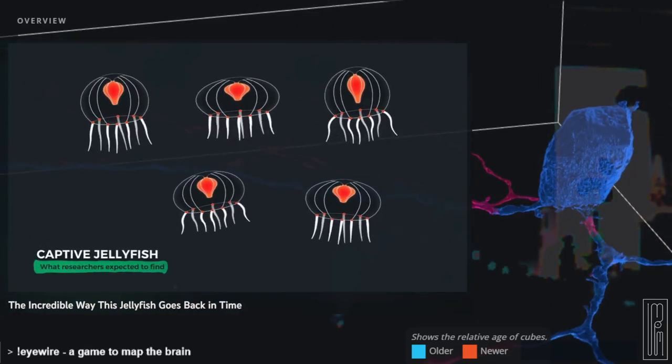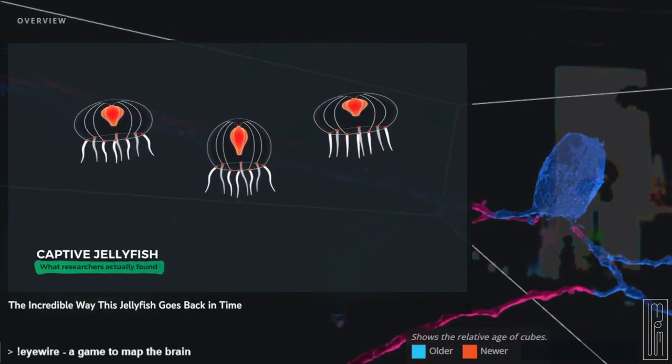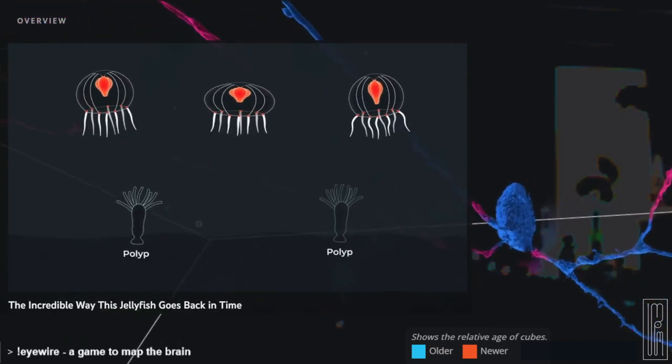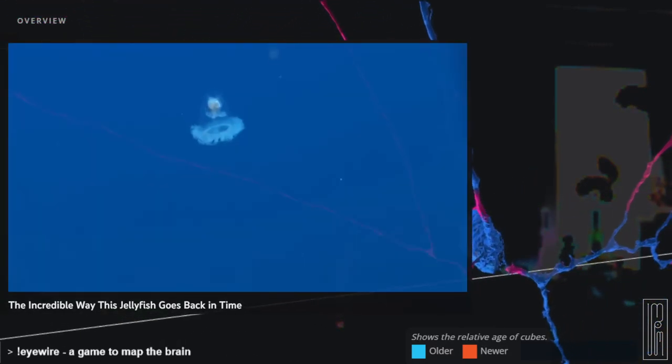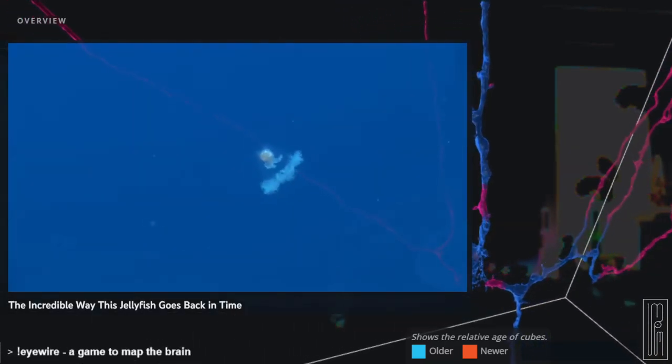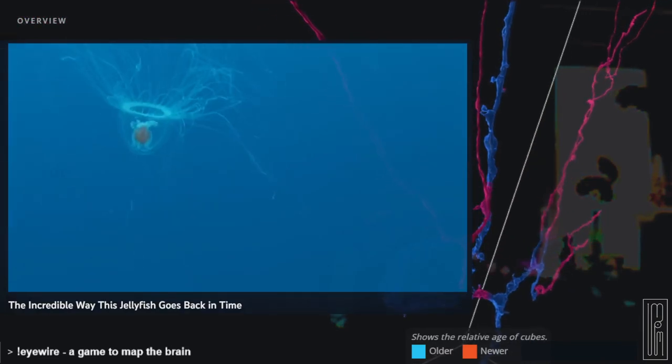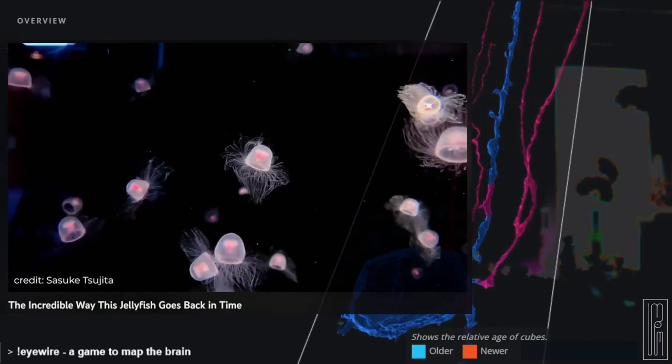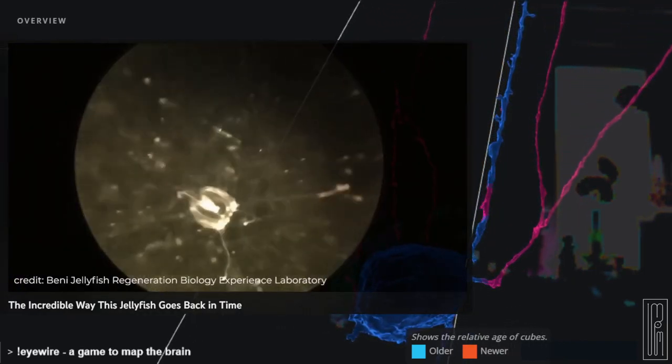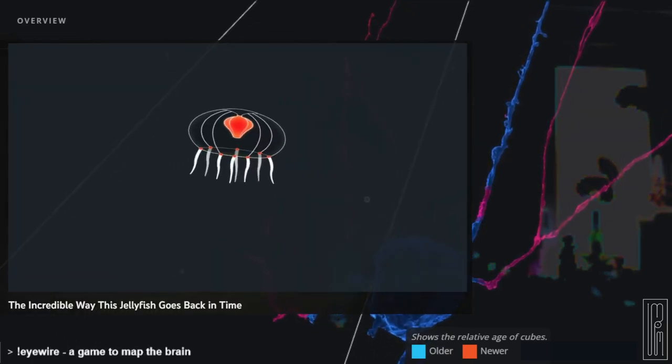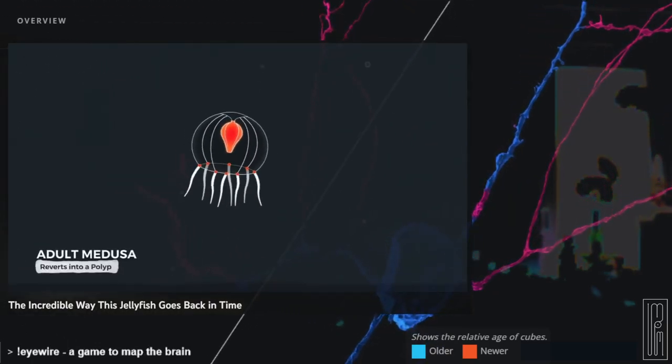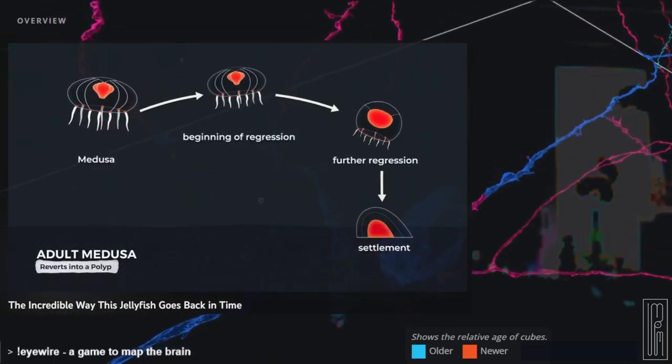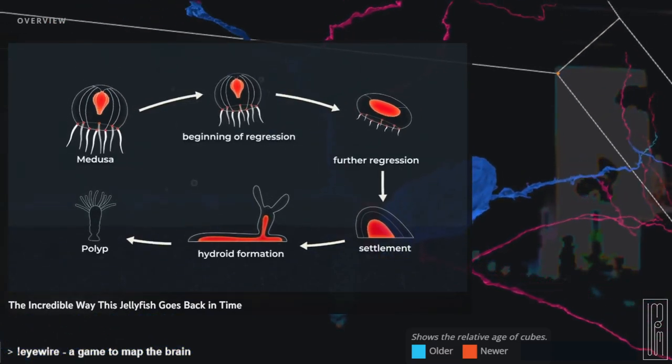When they returned, they expected to find sexually mature adults. Instead, they found fewer adult medusae than when they started, and lots of babies, in the form of newly settled polyps on the bottom of the tank. Had these jellyfish reproduced that quickly? And if they did, what happened to all of the adults? To find out, the researchers started to keep a close watch on the individuals in the tank. And what they found shocked them. The adult medusae were not spawning and reproducing to create new baby polyps. They were themselves reverting back into their juvenile form, completely reversing the aging process.